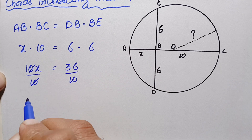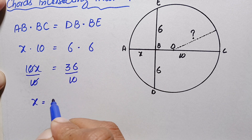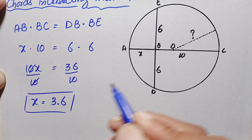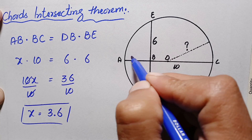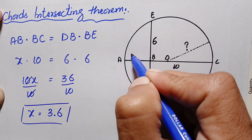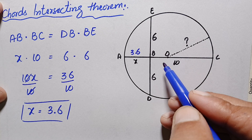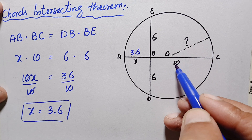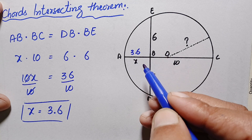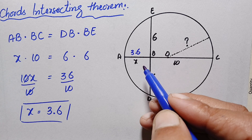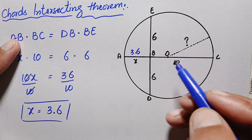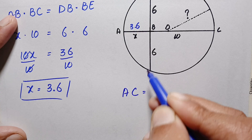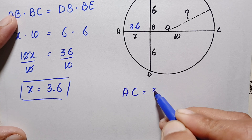Dividing both sides by 10, the 10s cancel and we get x equals 3.6 units. So segment AB is 3.6 units. Looking at chord AC, this is the diameter of the circle, which has a total length of 3.6 plus 10. The diameter is therefore 13.6 units.